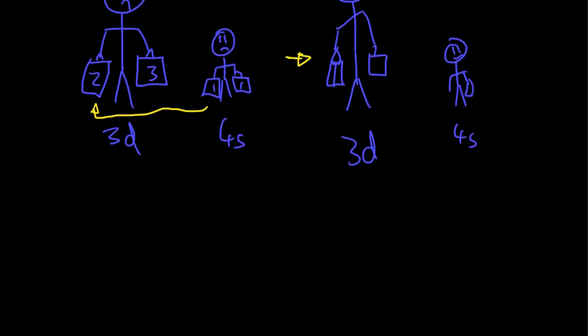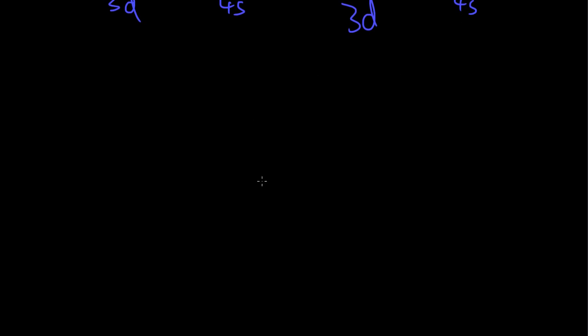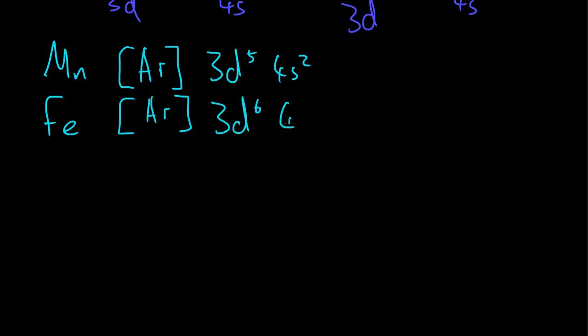So after that, we end up sticking another electron into the 3d to fill it up again. So that's manganese. So it's going to be 3d5 4s2. And then with the next one, iron, we keep on adding them into the 3d again. So it kind of resumes back to the normal thing that we would expect it to be. And then the last one is nickel.